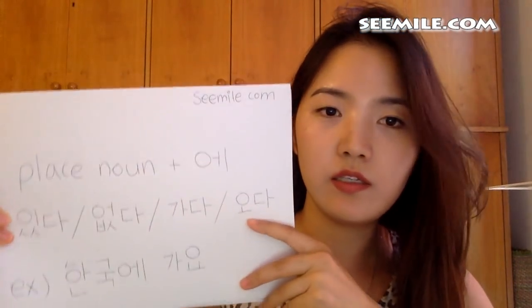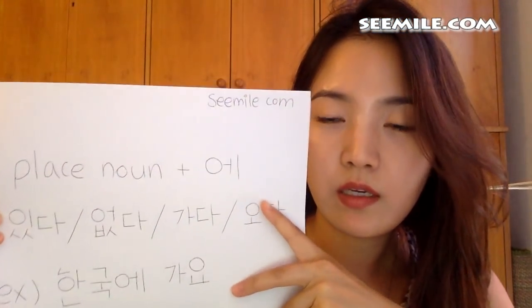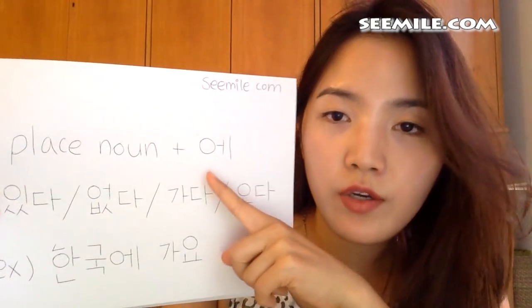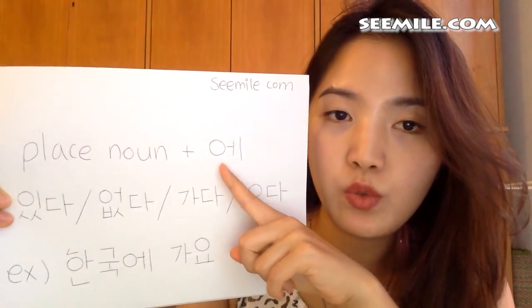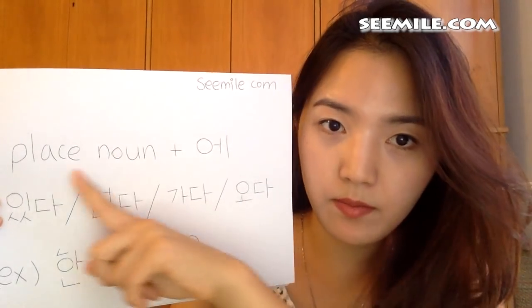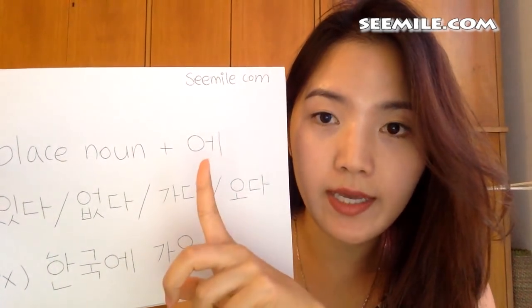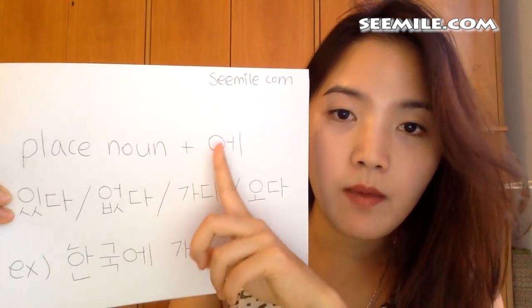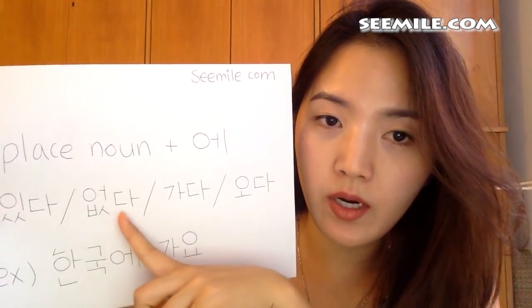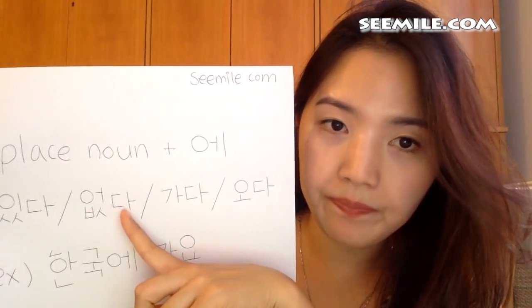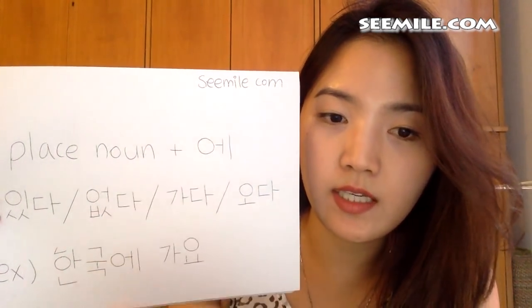And today, we're going to learn another particle: 에. Here, you can see 에. It's also used with a place noun, just like 에서. But 에 is used with 있다 or 없다 to indicate existence.